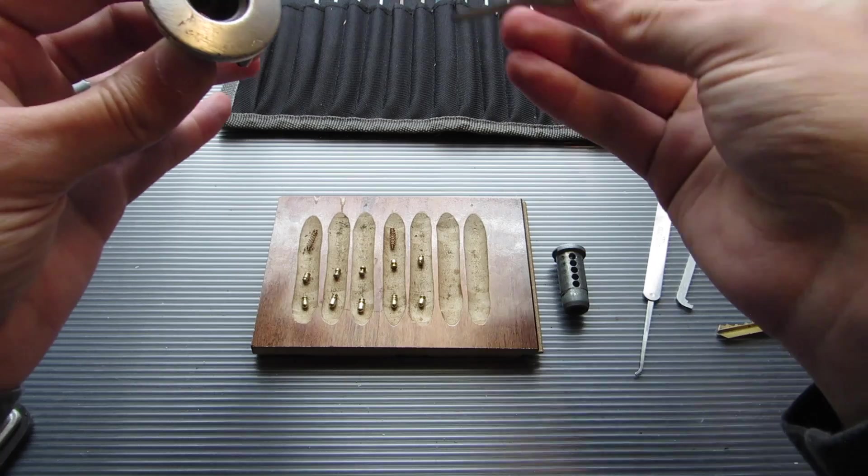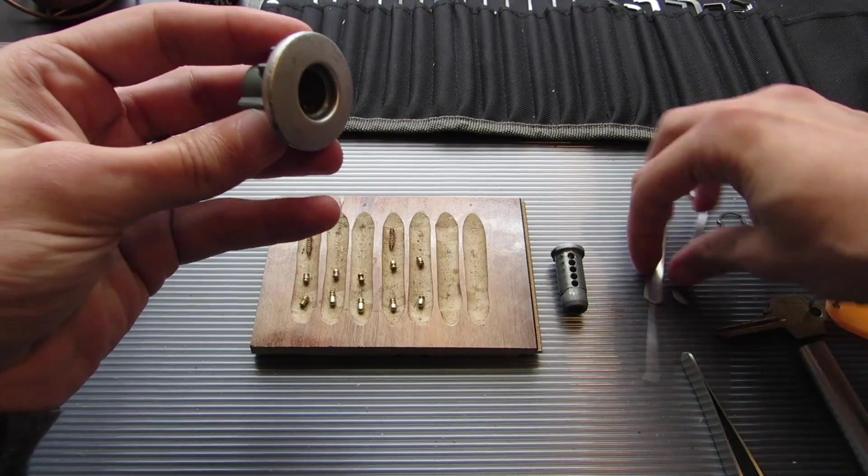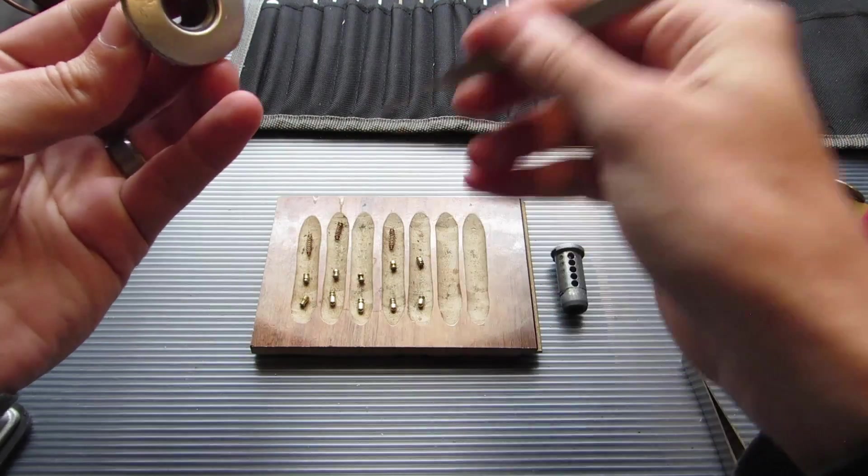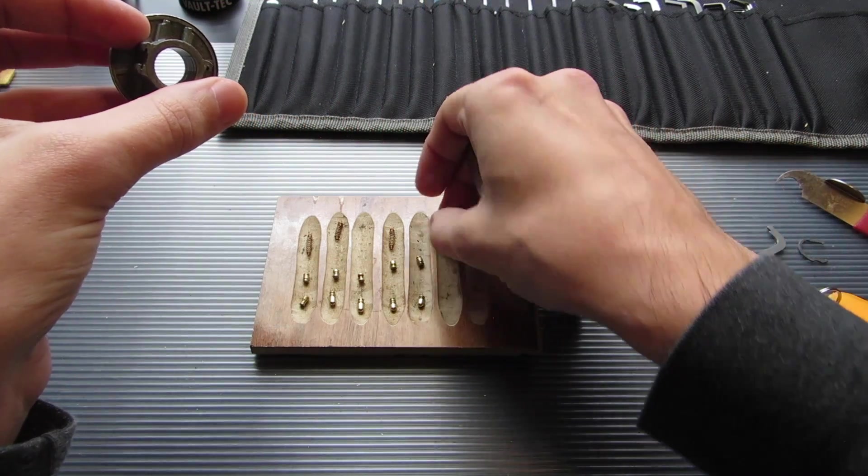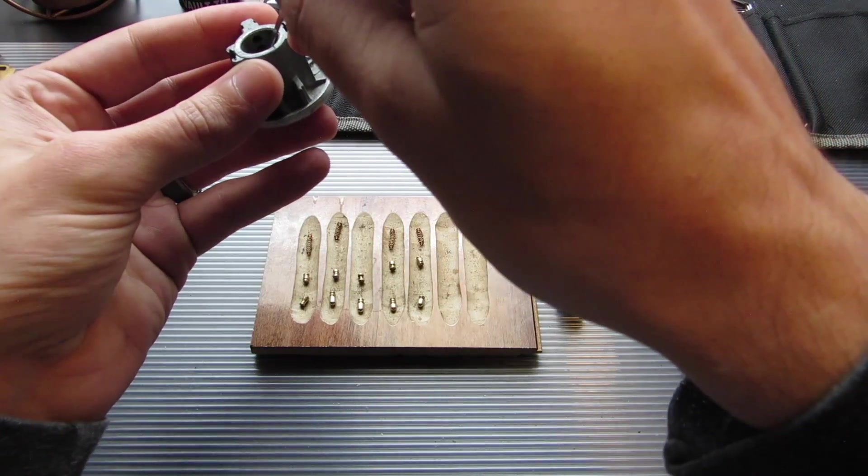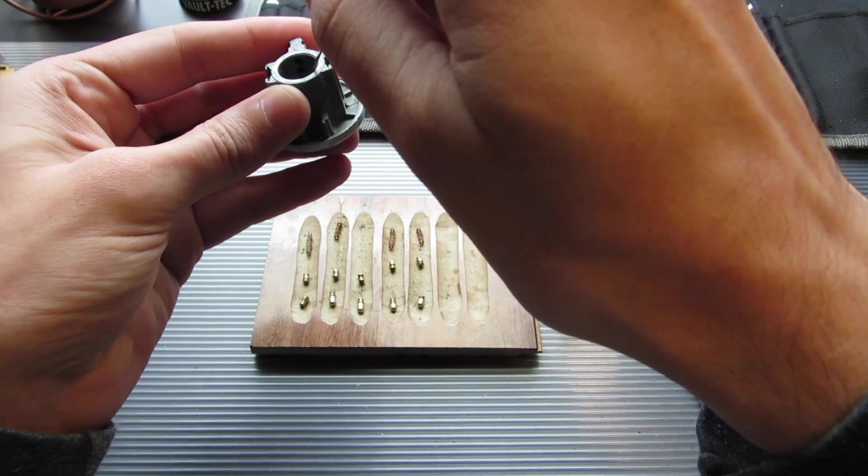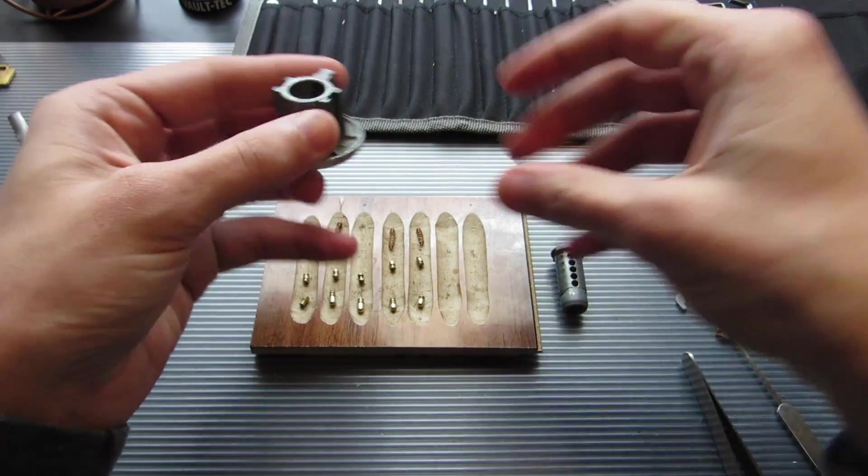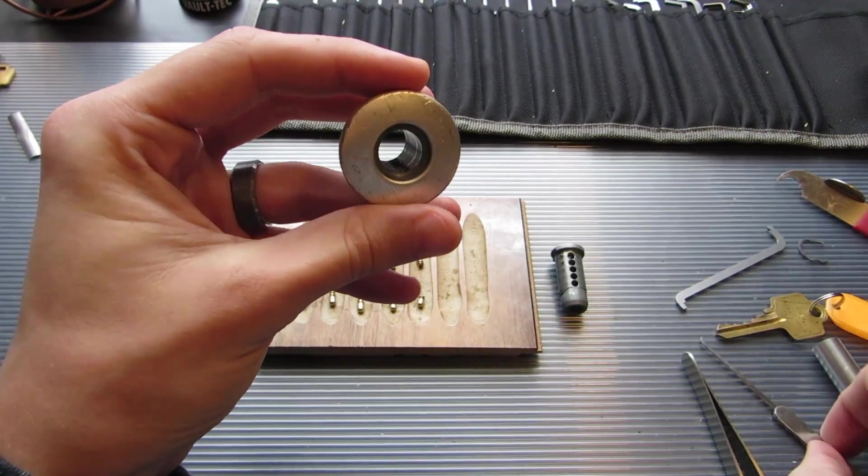And five is a double-sided, looks like a spool on that. Let's see if we can get these springs out of here nicely. Three does not seem to want to come out. All right, that one must just be stuck in there. And it looks like we've got threading on three, four, and five in the bible.